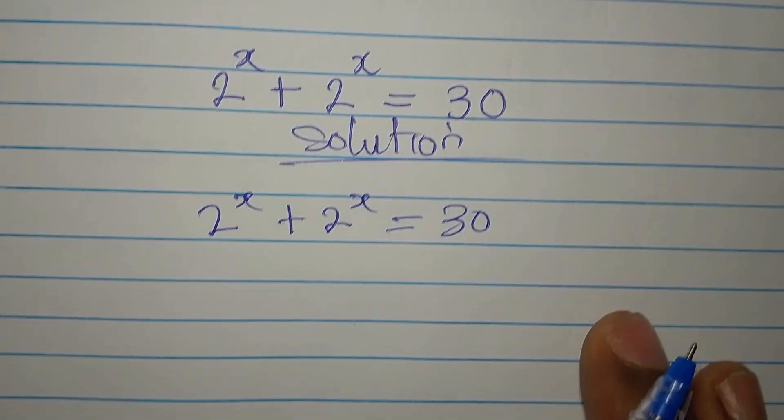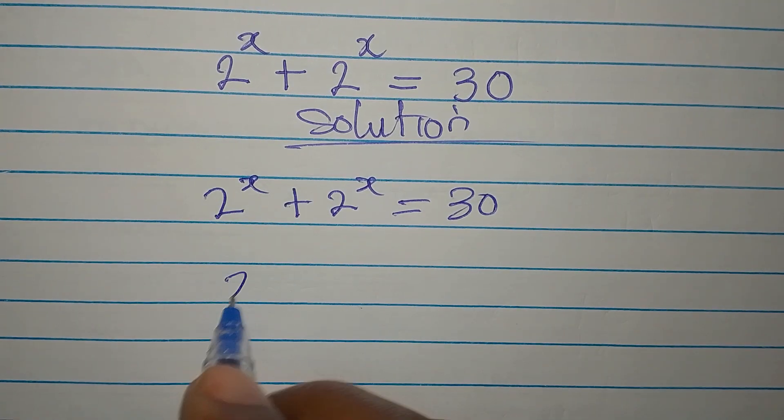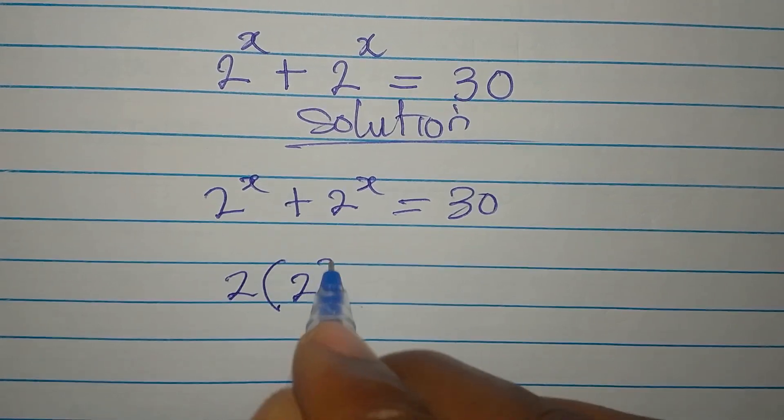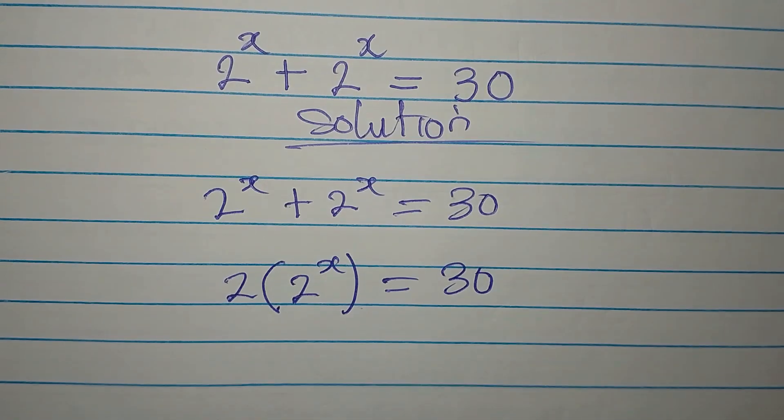Okay, do not disturb yourself, just add this 2 to get 2 times 2 to the power of x, and that is 30.